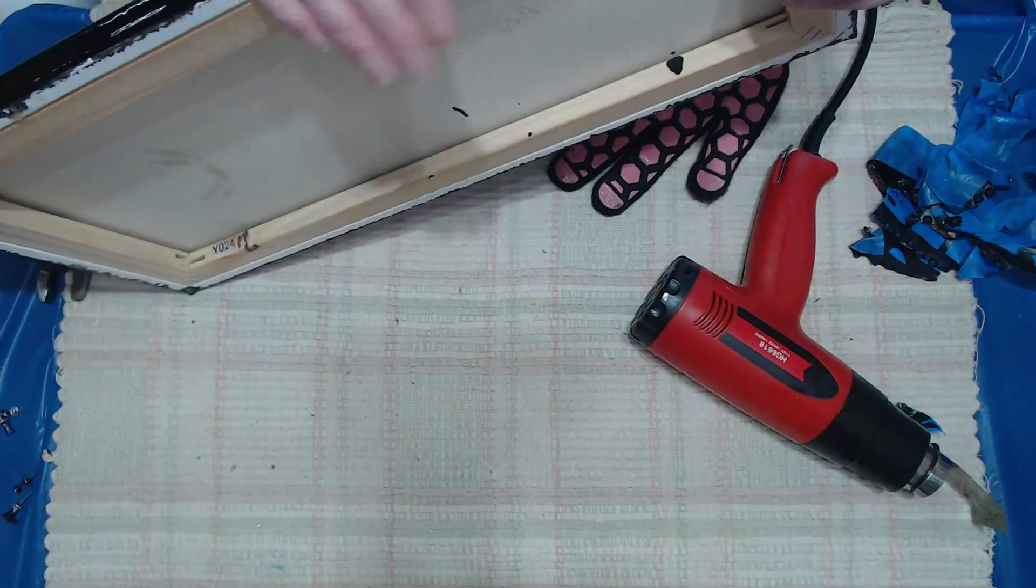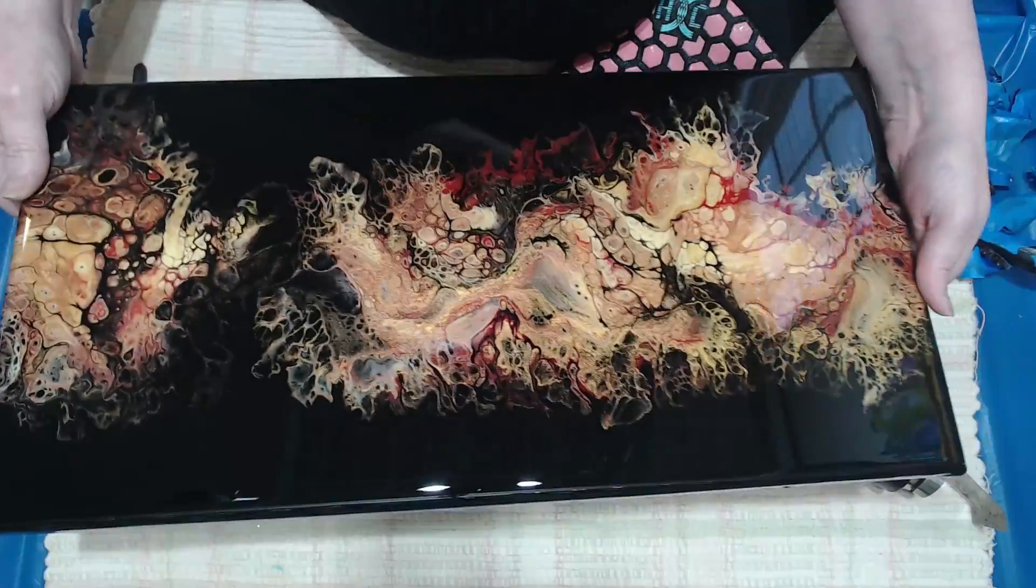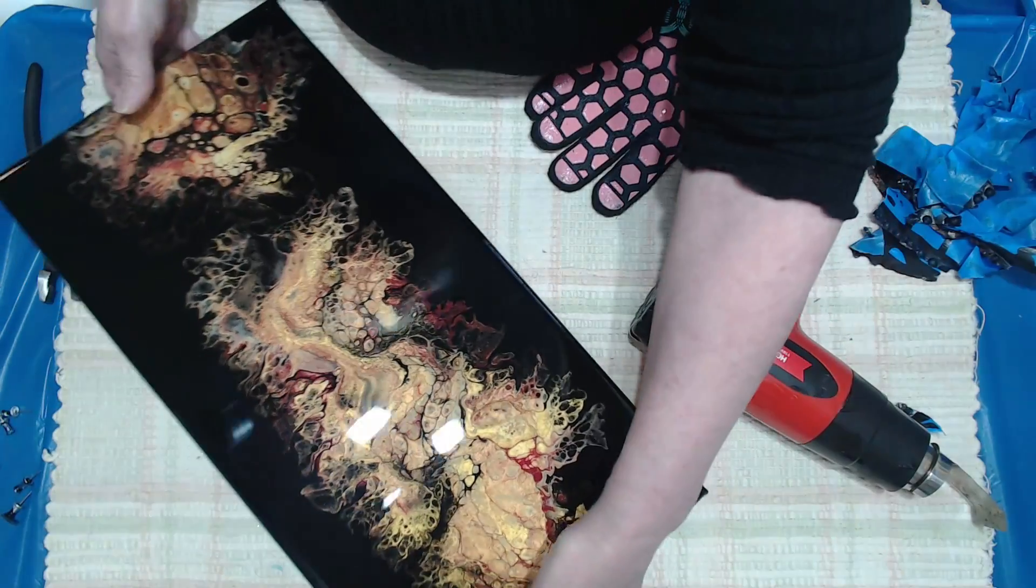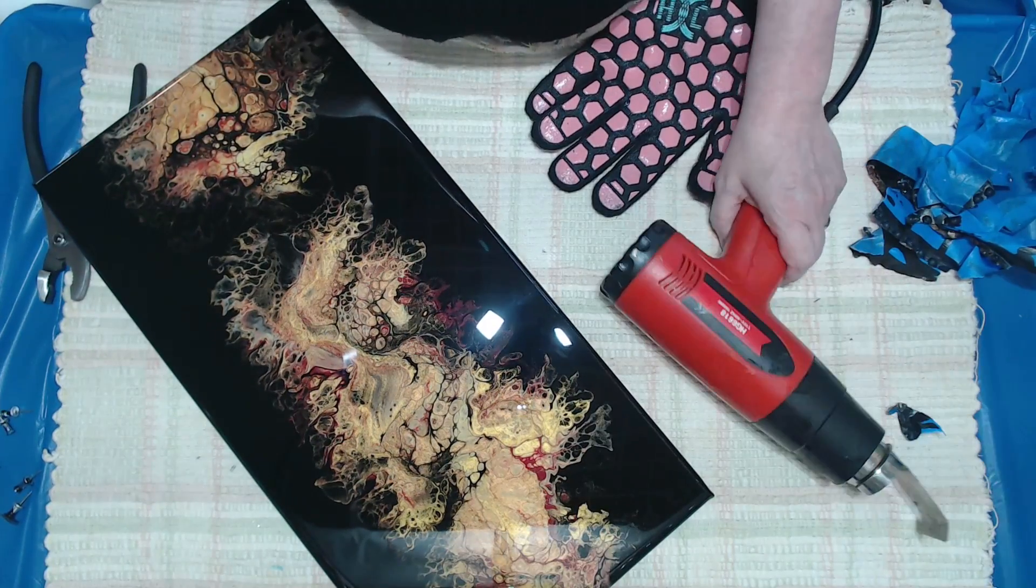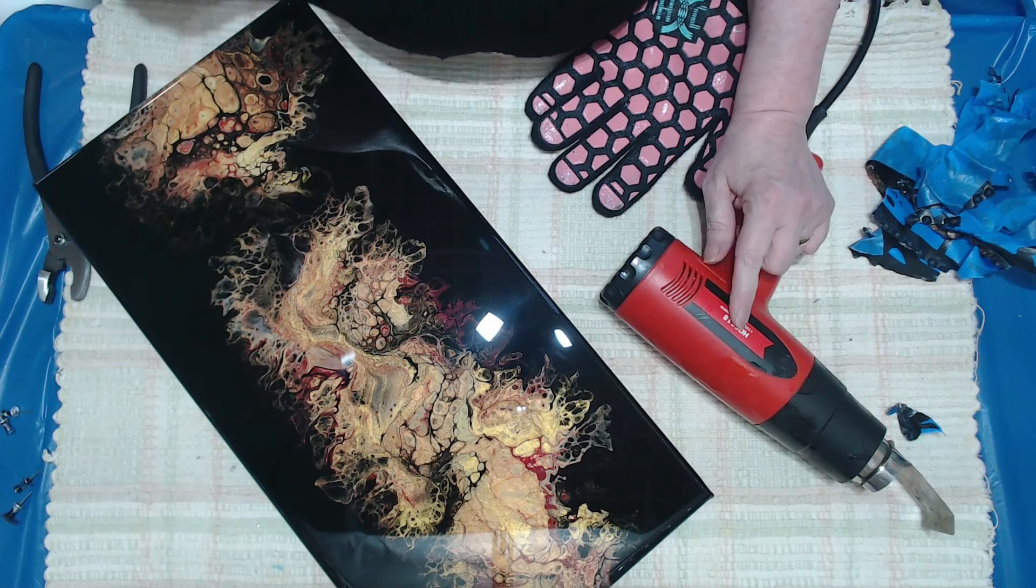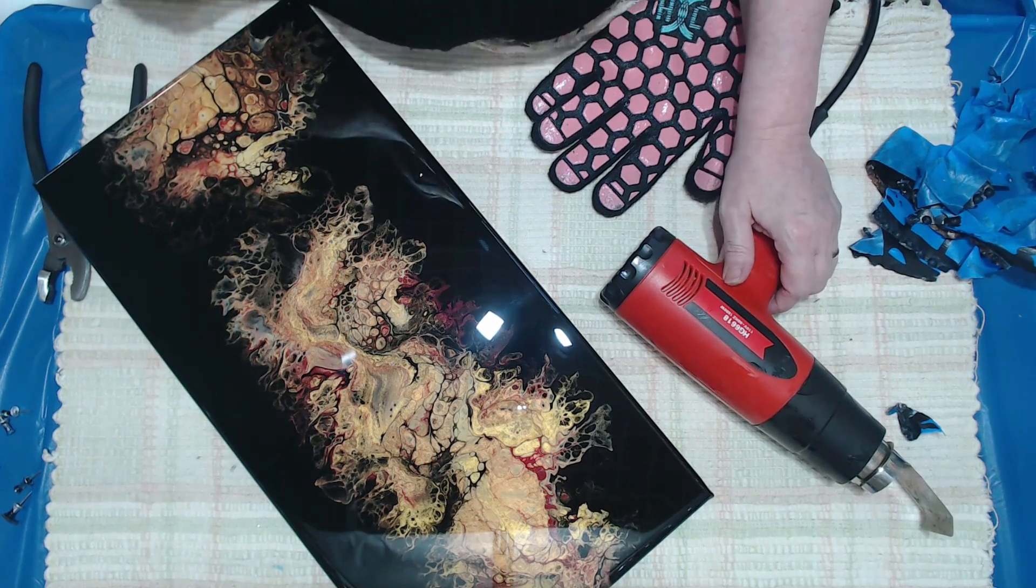So yeah, that was pretty easy. So keep that in mind when you're doing resin work. Get yourself a heat gun. This was just a tipi that I bought. Alan bought me a brand new one. I have not taken it out of the case yet.